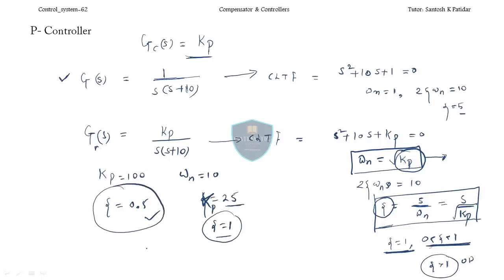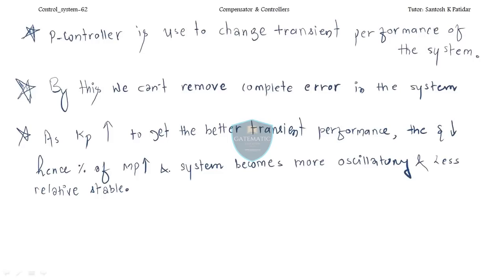So we can say: the P controller is used to change the transient performance of the system as per the requirement. This is the first key point. The P control is used to change the transient performance of the system.